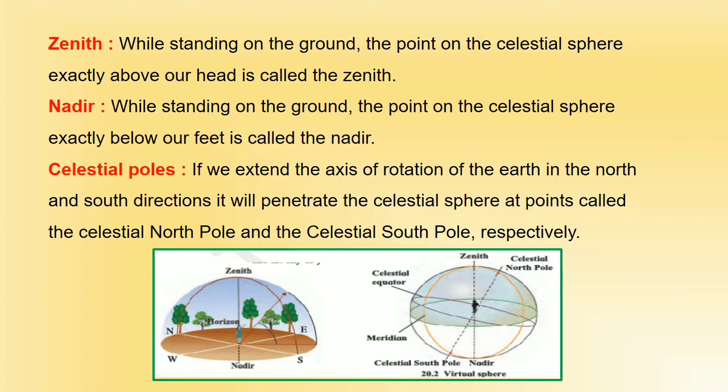Nadir: while standing on the ground, the point on the celestial sphere exactly below our feet is called the nadir. Celestial poles: if we extend the axis of rotation of the earth in the north and south directions, it will penetrate the celestial sphere at points called the celestial north pole and the celestial south pole, respectively.